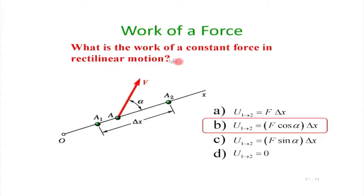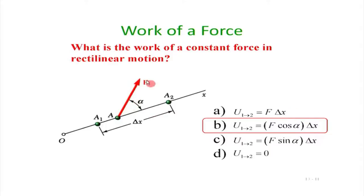For rectilinear motion, if a particle moves from A1 to A2 in a straight line with a force at angle alpha, the work done is F·cos(alpha)·dx. Because the force is constant in direction and magnitude, the work done in moving the particle from 1 to 2 is simply F·cos(alpha)·Δx.